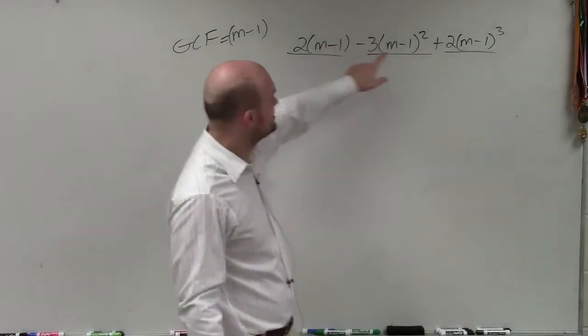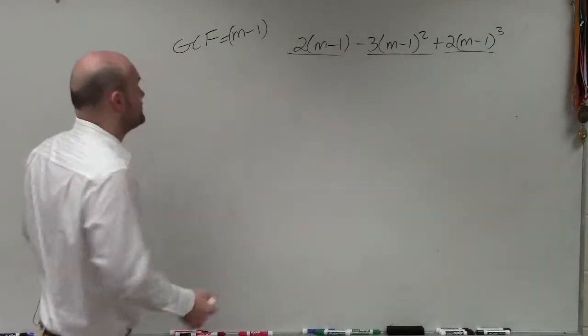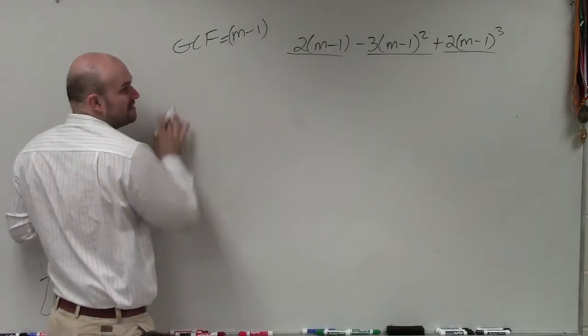Now this is m minus 1 to the first. That's m minus 1 to the second. Now it's m minus 1 to the third power. But they all contain m minus 1. So therefore, that's going to be my GCF.